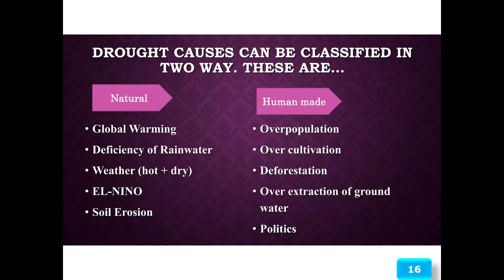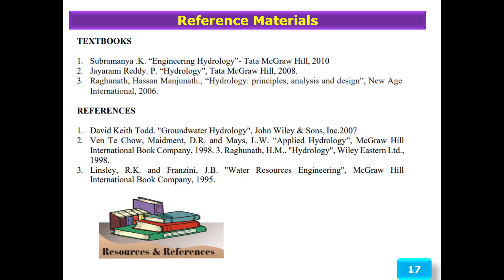Indirect impacts include loss of rural and urban revenues, fire hazards, and loss of water access. Drought causes can be classified in two ways: natural and human-made. Natural causes include global warming, deficiency of rain, weather patterns, and soil erosion. Human-made causes include overpopulation, over-cultivation, deforestation, over-extraction of groundwater, and poor policies. These are the reference materials. Thank you.